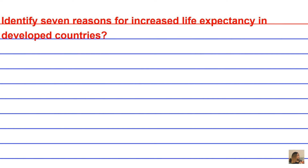Identify seven reasons for increased life expectancy in developed countries. So you can pause and take a moment to think — what would seven reasons be for a resultant outcome of increased life expectancy of a general population? I'll give you a moment to think.